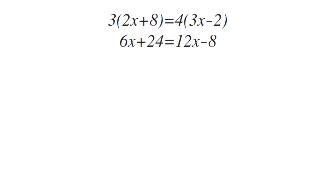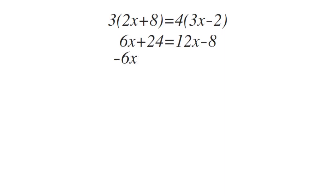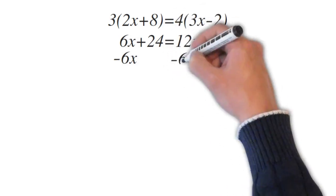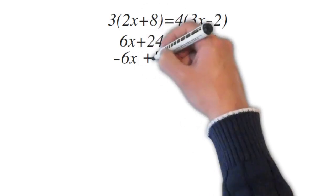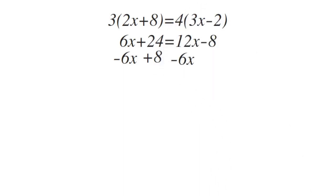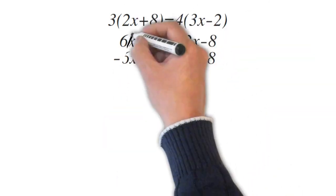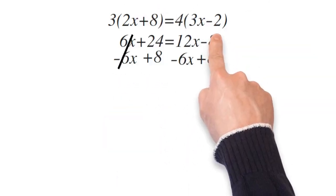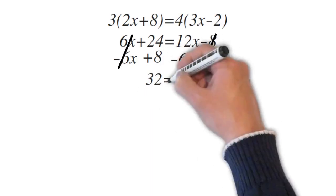Now we need to get all the x's on one side and all the constants on the other side. 12x has a greater coefficient than 6x, so we're going to put everything on the right side again this time, and the constants on the left side. Subtract 6x from both sides, and add 8 to both sides. That undoes the 6x on the left and undoes the 8 on the right, and gives us 32 equals 6x.